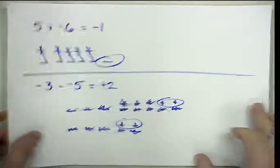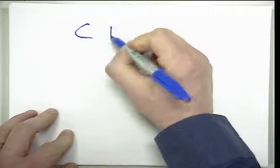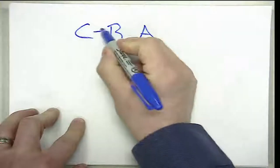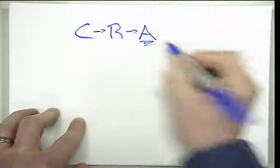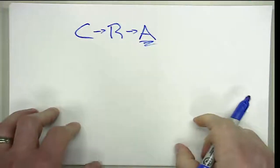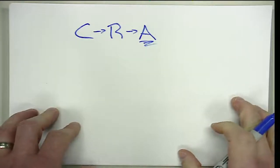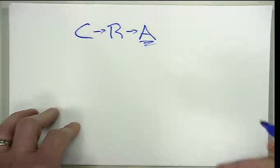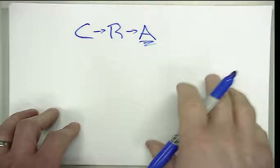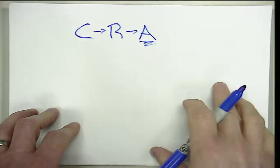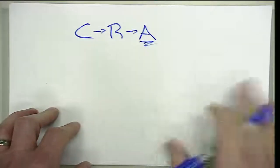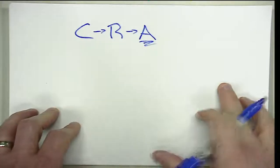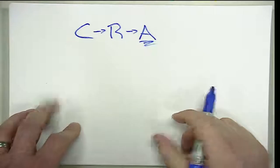As we transition from the concrete to the representational and ultimately to the abstract, we have to establish those rules with our students. Rules like adding the opposite, and when we're adding the same signs, we can add the absolute value of the numbers and the sign remains. When we're adding opposite signs, we're going to find the difference and keep the sign of the number with the larger magnitude.